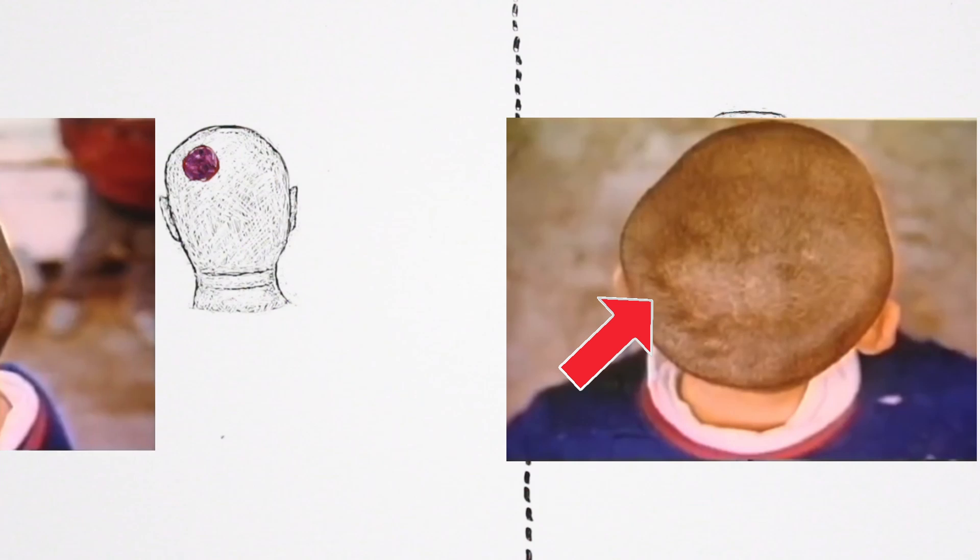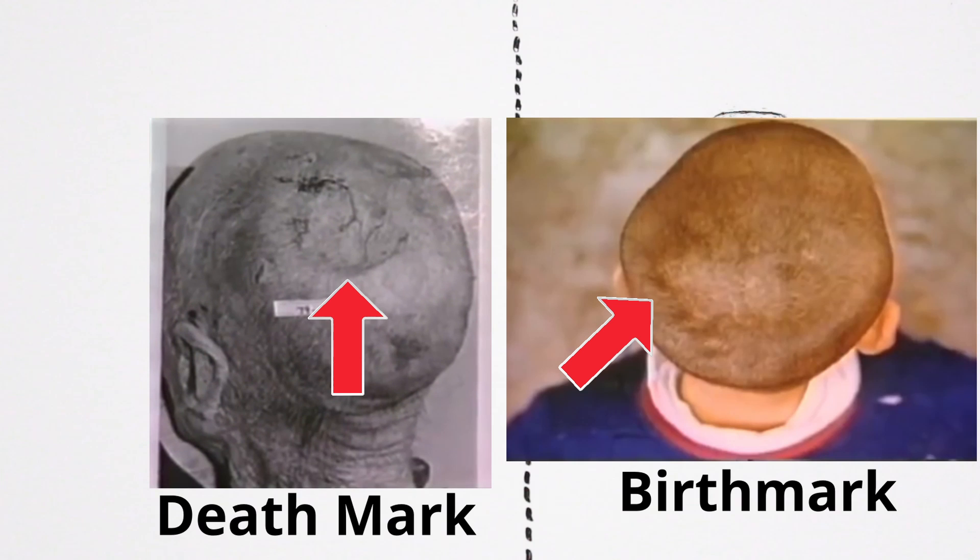If you ask me, the universe is showing us that death is connected to birth. Mehmet's unusual death mark matched the location of Suleyman's unusual birth mark.